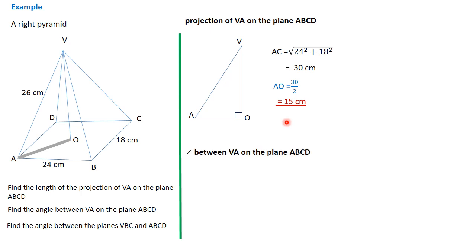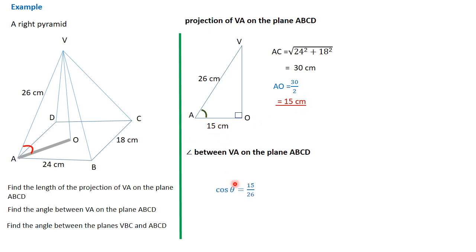We are now asked to look for the angle between V,A and the plane A,B,C,D. We said the angle between a line and a plane is the angle between the line and its projection on the plane. Therefore, the angle we're looking for is the angle between the line and its projection — that red one there. V,A is 26, as given. A,O we just found is 15. Therefore, cos theta equals adjacent over hypotenuse, which is 15 over 26. Cos inverse of that gives 54.77 degrees.